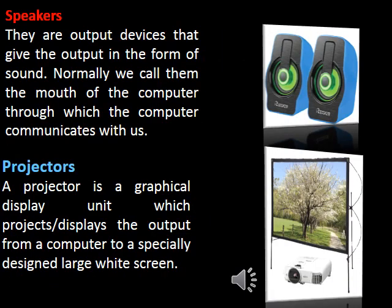The fourth type of output device is speakers. They are output devices that give output in the form of sound. We normally call them the mouth of the computer through which the computer communicates with us. The fifth type of output device is projectors. A projector is a graphical display unit which projects or displays the output from a computer onto a specially designed large white screen.